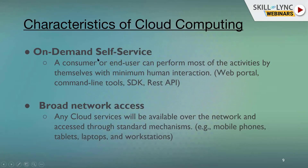The first essential characteristic is on-demand self-services. A consumer or end user can perform most activities by themselves with minimum human interaction. Examples include web portals, command line tools, SDKs, and REST APIs — such as the Google Maps REST API. These are all sample examples of on-demand self-services.